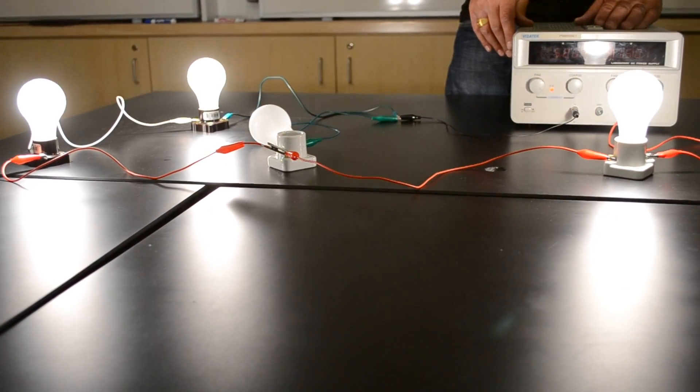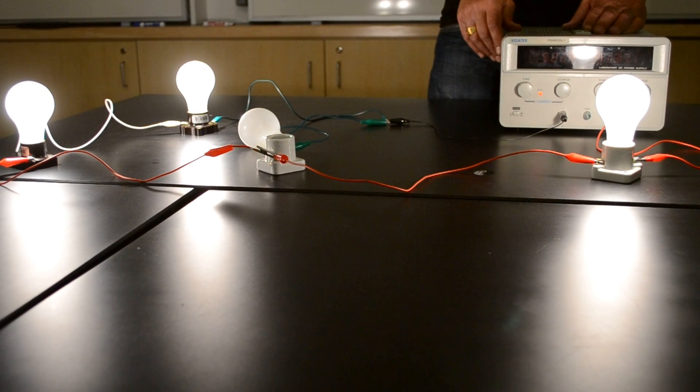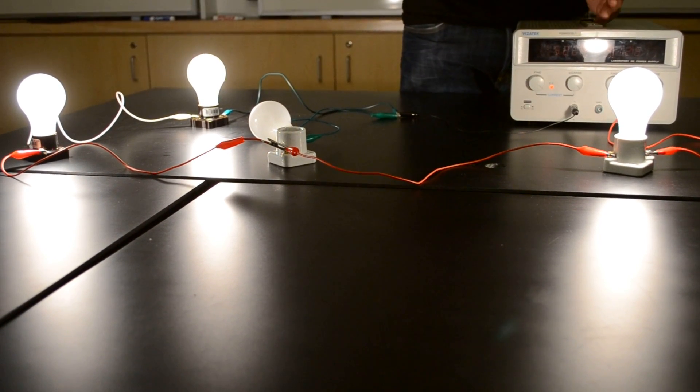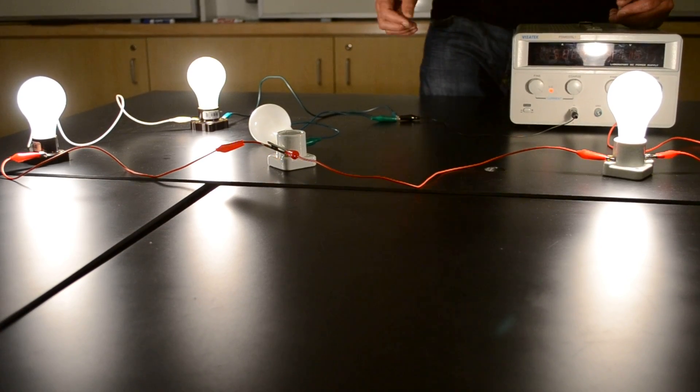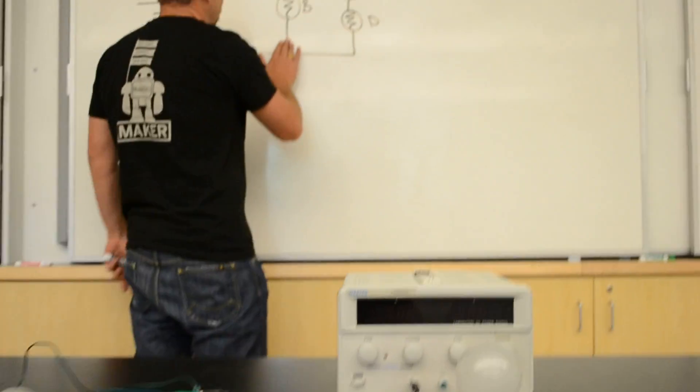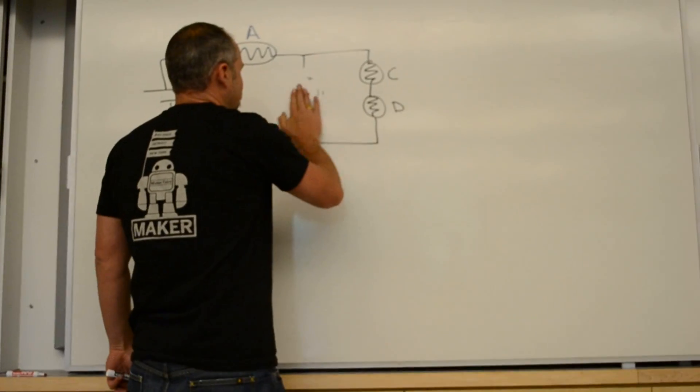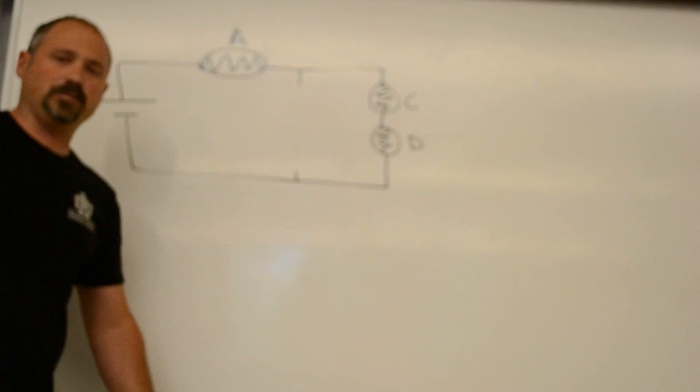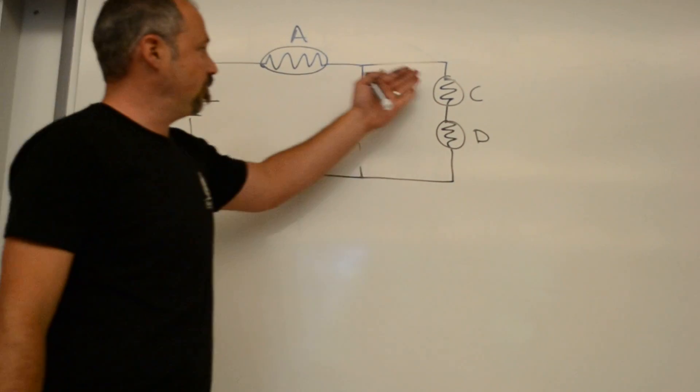Voila! Nicole wins again. What do we have here? Well, they're all equally bright. And in fact, what we have here is a series circuit. We took this guy out and now it's just three light bulbs in a series. They're all going to be the same brightness.